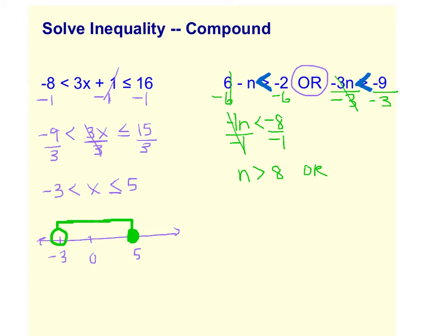And we have N is, I think... We just divided by a negative number, so we're going to flip our sign. And we're going to pretend that I did this right the first time. We're going to use the original sign that was there. Sorry about that.